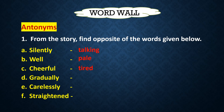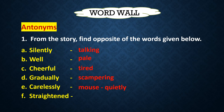Now the next word is 'gradually.' Which word is the opposite of gradually used in our story? The word is 'scampering.' Scampering is the word used in the story which is the opposite of gradually. Next word is 'carelessly.' The opposite of carelessly is 'mouse quietly.' And the last word is 'threatened.' Threatened means stood straight, so the word opposite to this used in the story is 'sit.' These are the antonyms you have to write down in your copy.